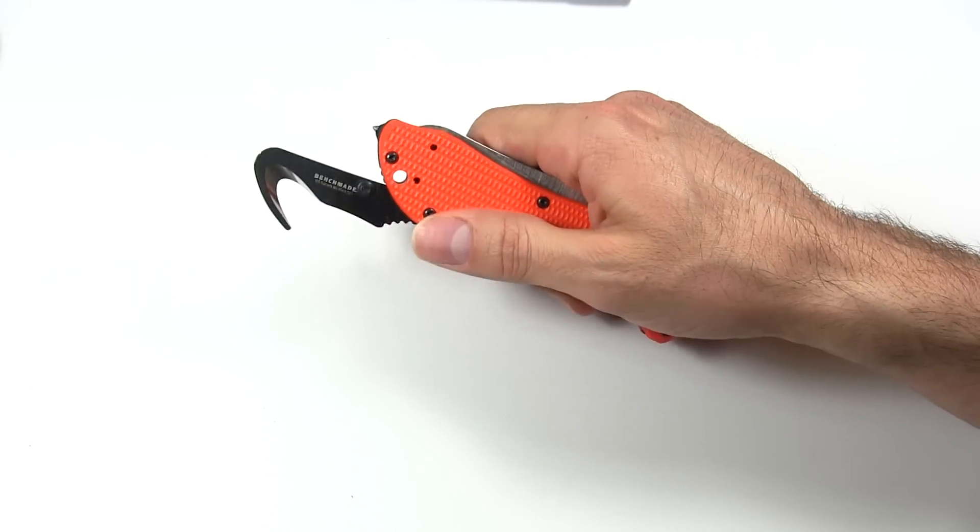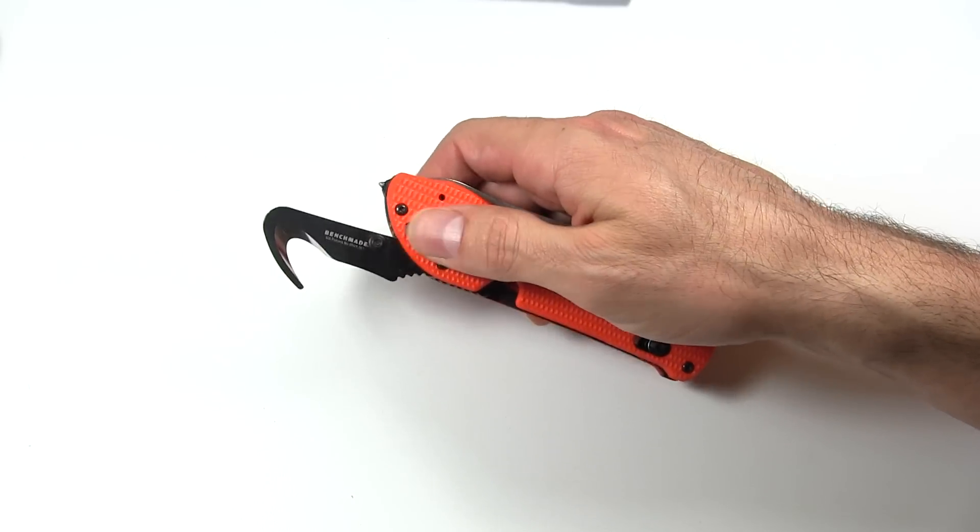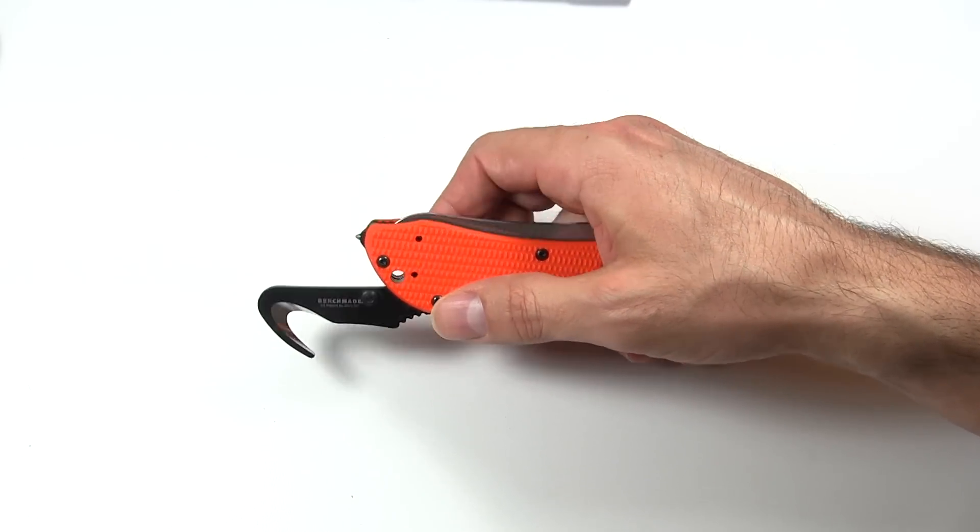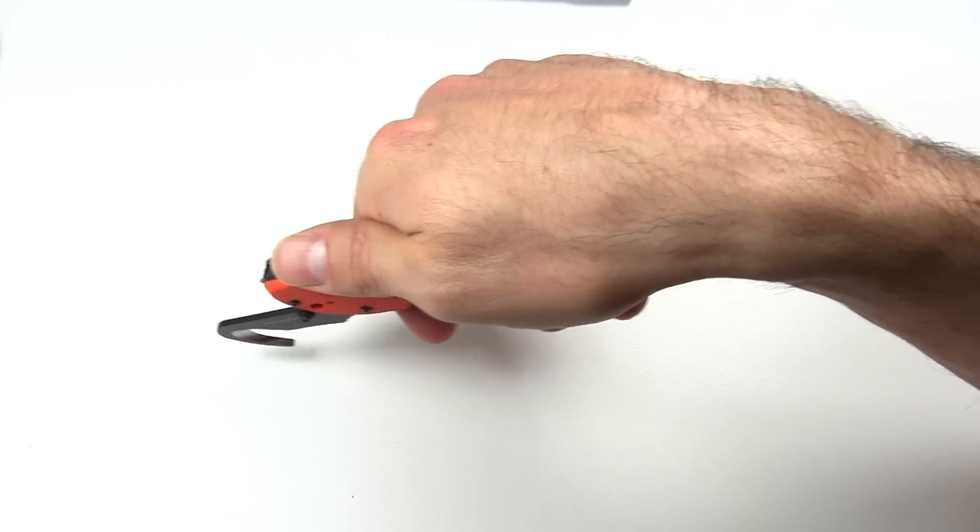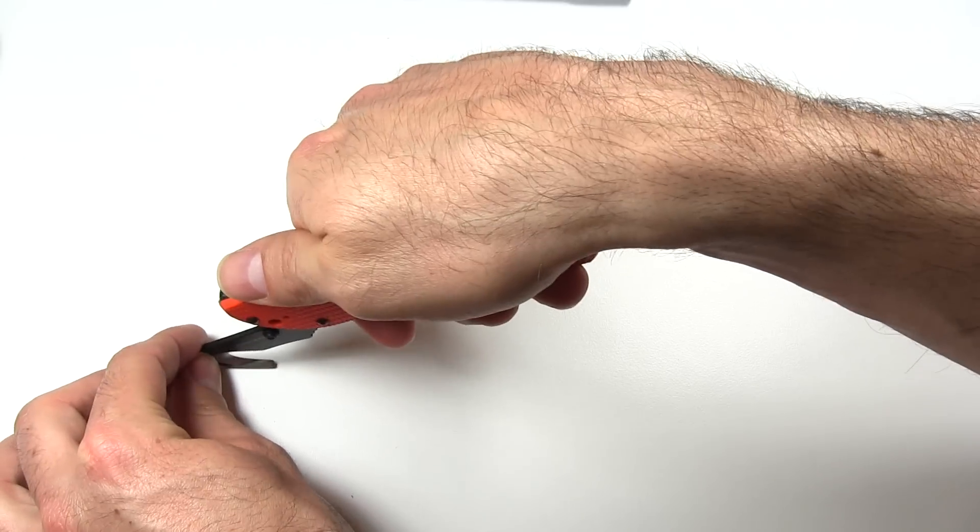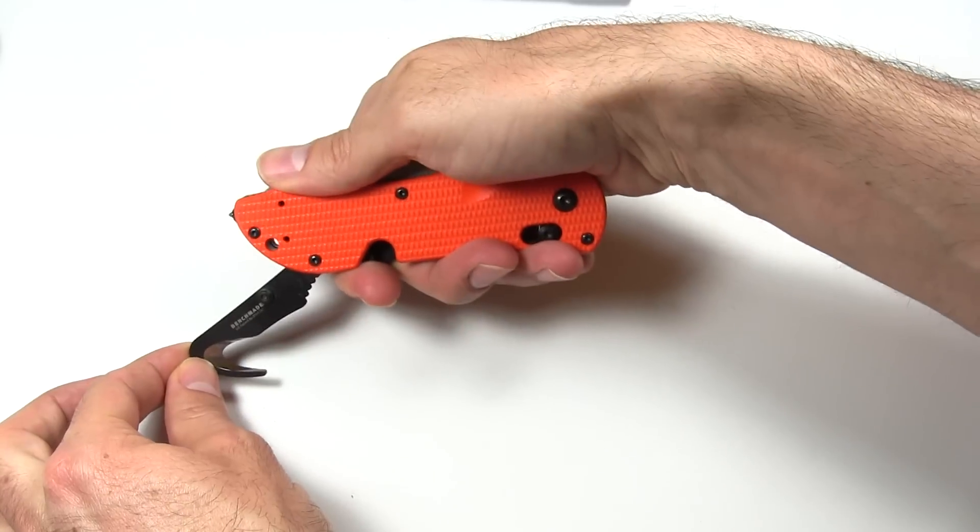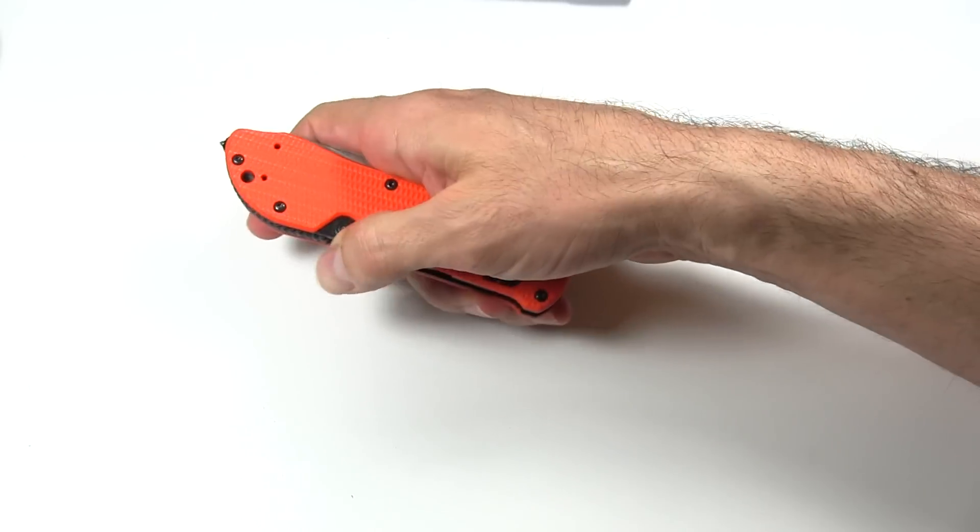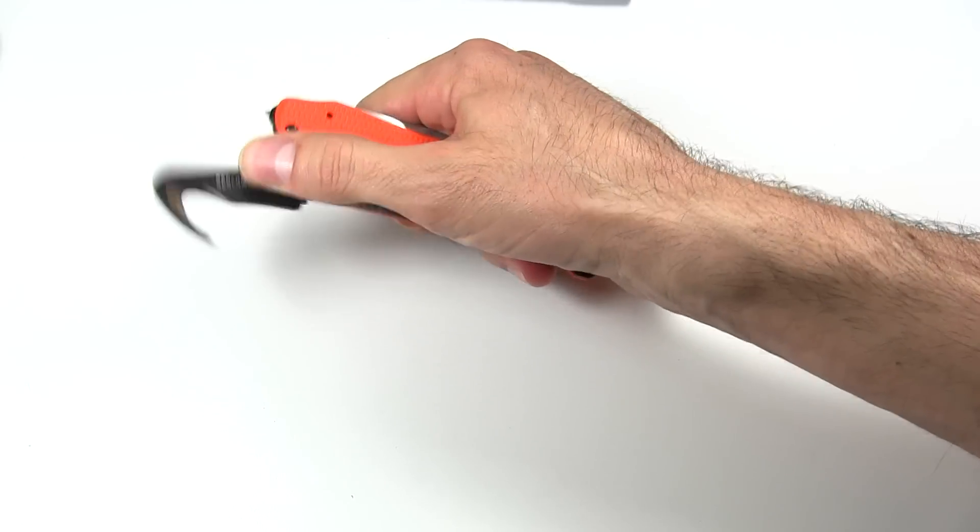On this rescue hook, it doesn't have a lock. It just has a little bit of a detent here. Kind of clicks into place. And initially, I didn't like that. But as I thought about it, it actually makes sense. Because if you're going to be cutting, you know, say you're going to be running this along someone's pants to try and get them out of it because their leg is injured. As you run it along, this can actually flex a little bit depending on the position of your hand as you're pulling it through there. And so that actually makes a lot of sense. You can open it and close it, you know, with one hand. Very easy.